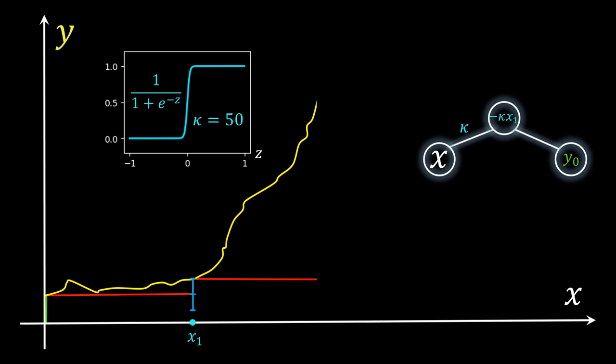These two terms give us our value z, so z is indeed just kappa times x minus kappa times x1. The value z is 0 exactly if x is equal to x1, so z switches from negative to positive at x1.